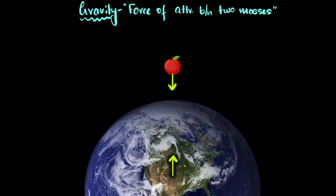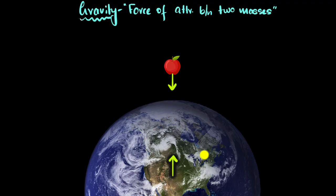So let's do that, and let's just stick to the Earth and the apple for now. The first question we could ask ourselves is: what will happen to this force of gravity if the mass of the Earth or the mass of the apple were to increase? Since the force of gravity is an attractive force between masses, we can expect that if the masses increase, the force of gravity should increase. So we can predict that the force of gravity should be directly related to both the masses of the interacting bodies.